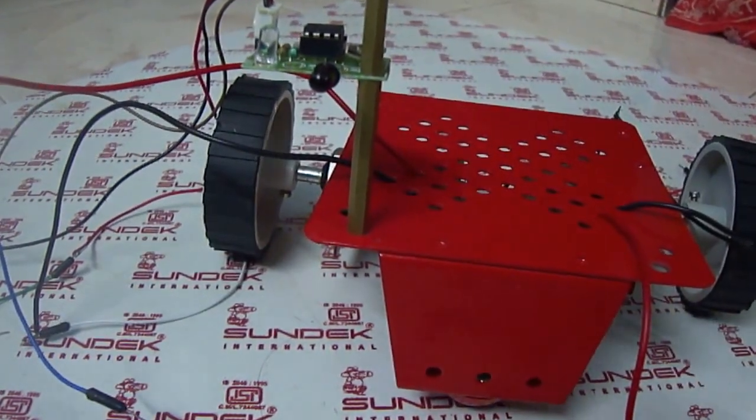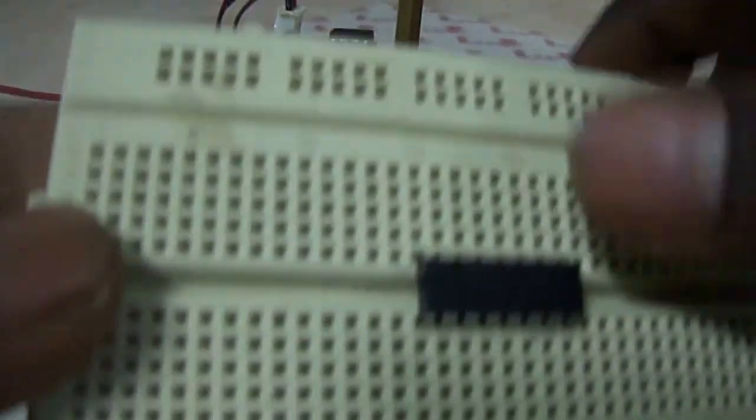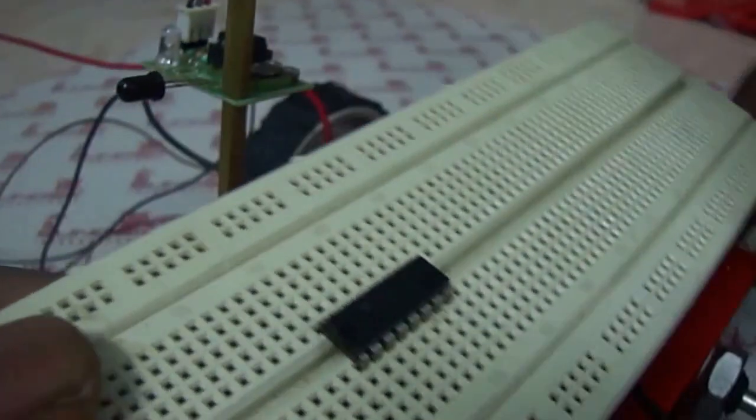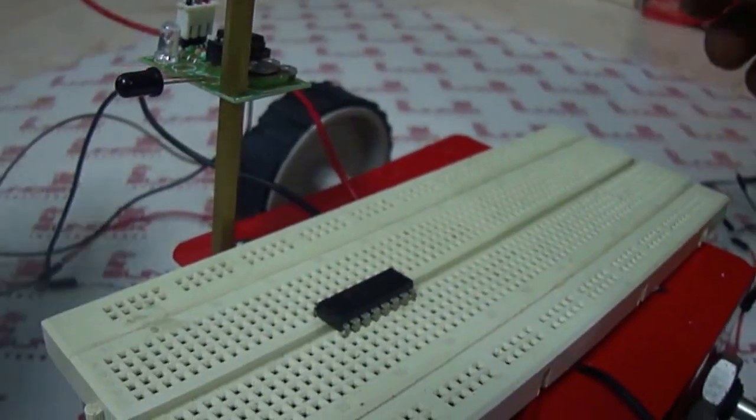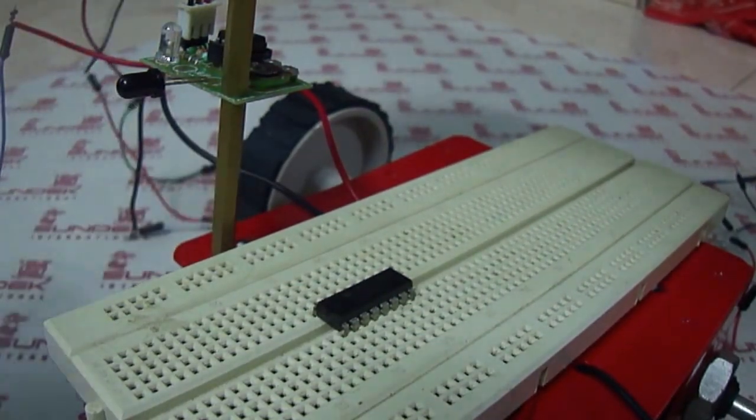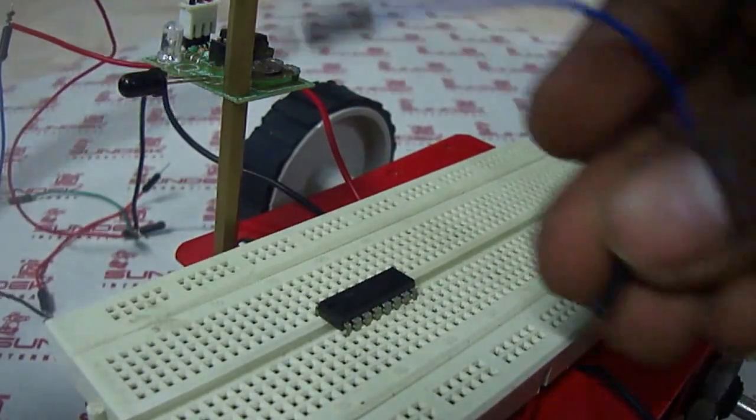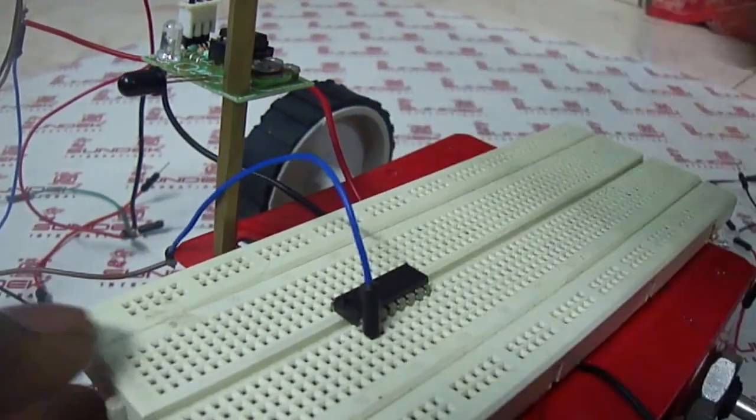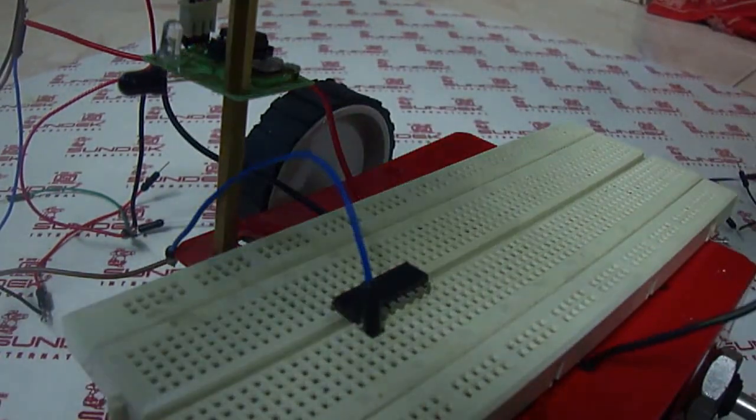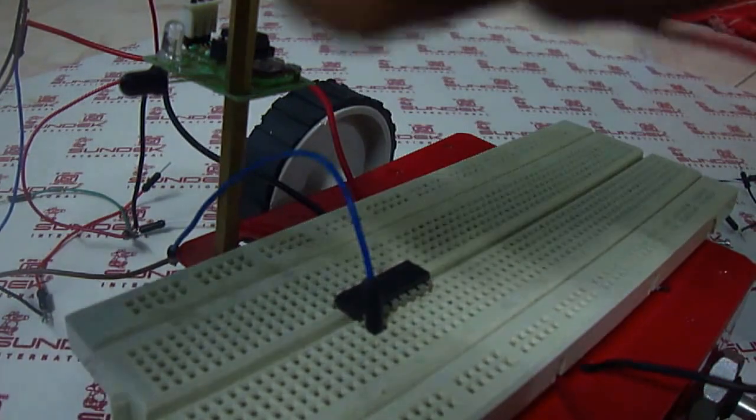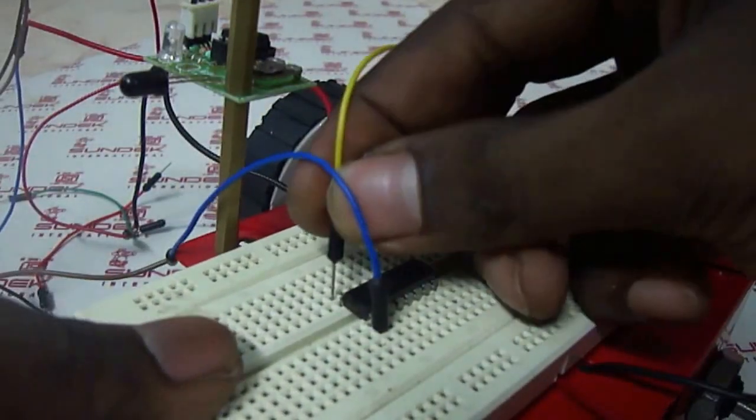Now let's see, I am going to connect the output of the sensor to the first two pins. So this is the output of the sensor. I am placing it here. I am connecting the first motor to here.